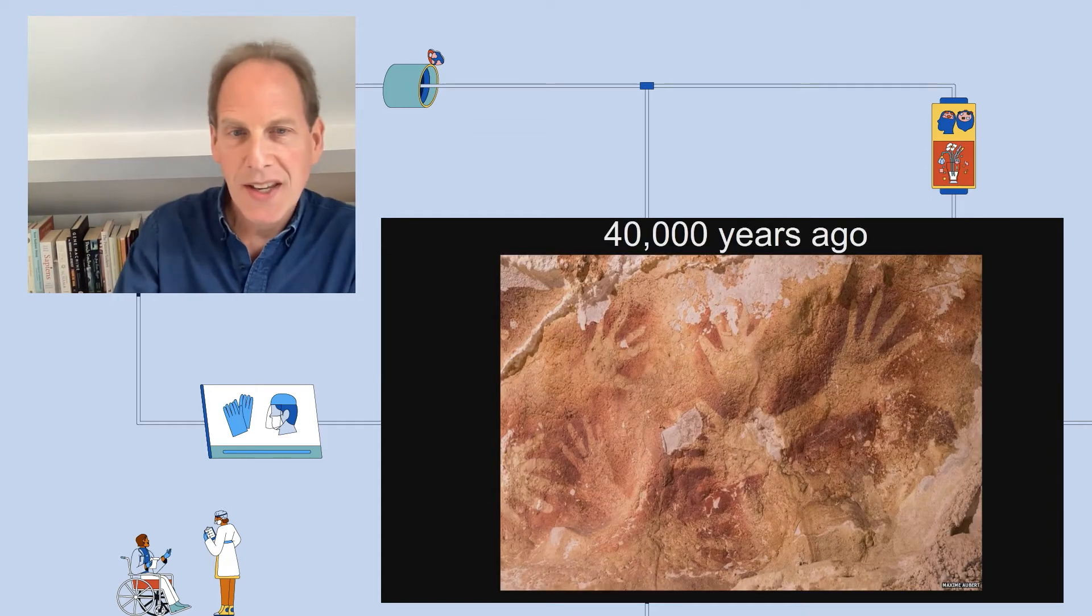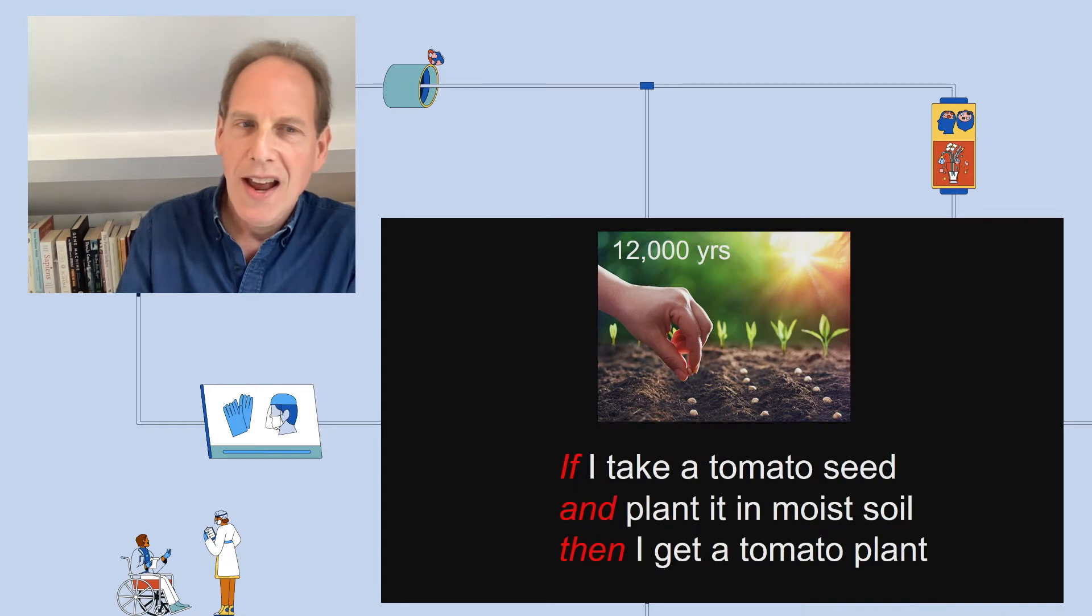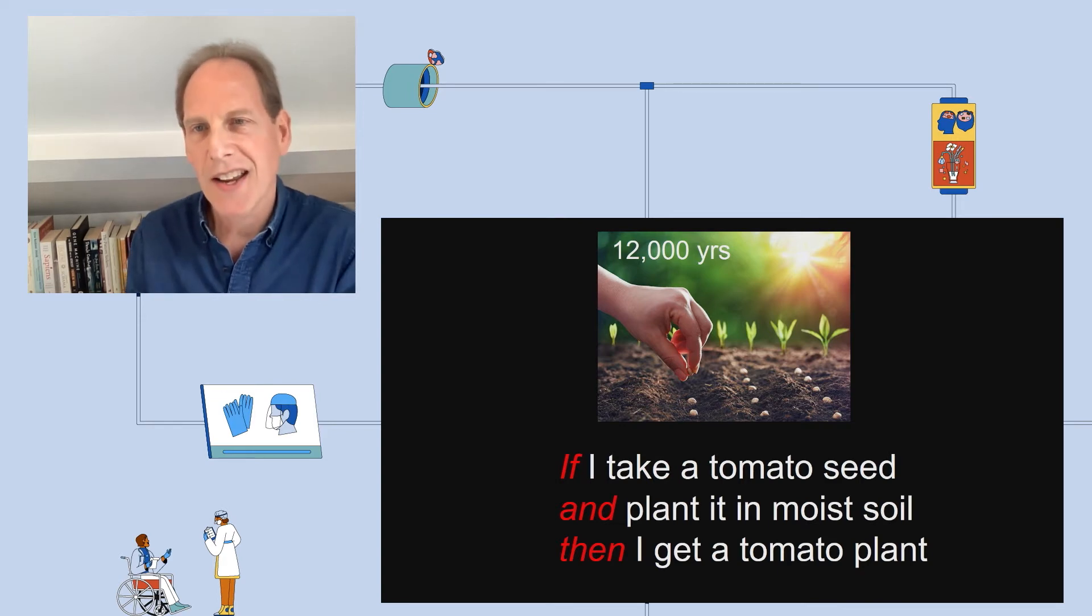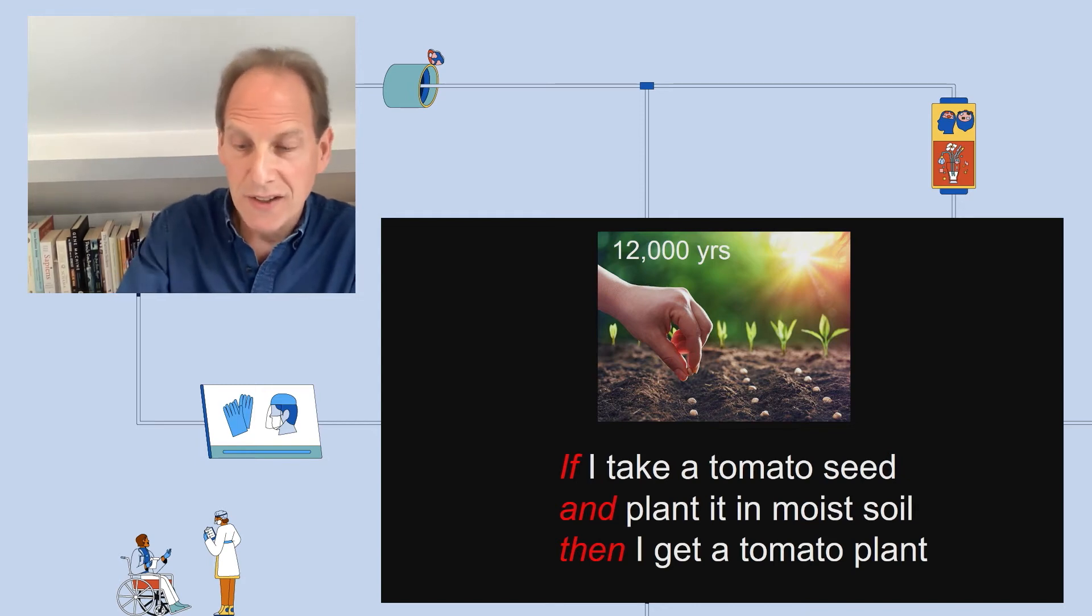And 40,000 years ago we see cave paintings. 25,000 years ago we see sculptures. And by 12,000 years ago we see the invention of agriculture. Again, the if-and-then algorithm: if I take a tomato seed and plant it in moist soil, then I get a tomato plant. And we just have to think about how the invention of agriculture transformed our diet, transformed our health and our lifestyles.